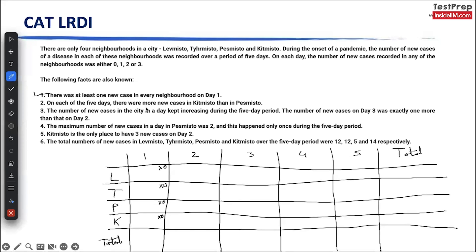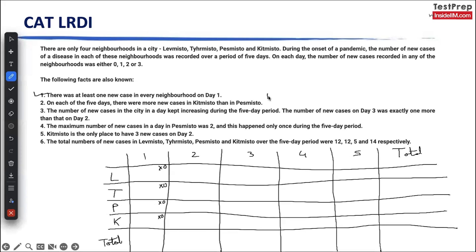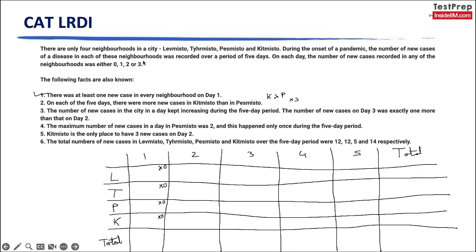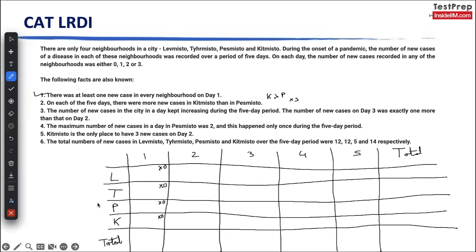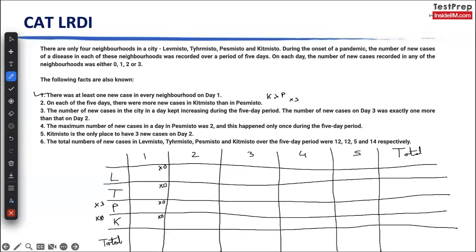On each of the five days, there were more new cases in K than in P — meaning K is greater than P for all five days. This means P can never take the value of 3, because if P were 3, K would have to be 4, which is not possible. So P will never have a value of 3, and K will never have a value of 0, because if K is 0 that would imply P is minus 1, which is also not possible.